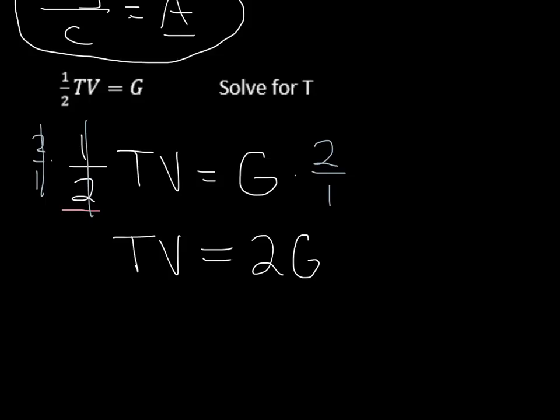Okay, so I have tv equals two g, and I'm trying to solve for t. I'm trying to get that t by itself. Again, you're just working to get rid of everything near the t, so I divide both sides by v, and the v's cancel on this left-hand side, and I get t is equal to two g over v.